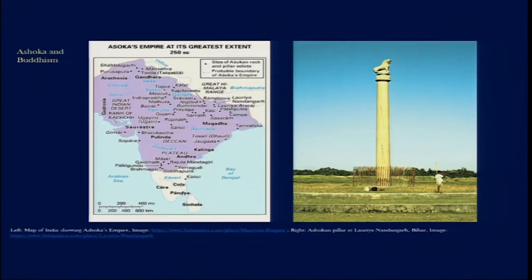We have a map on the left side of our screen showing the extent of Emperor Ashoka's kingdom — how far his political boundaries and the reach of his preaching of dharma went. This happened during the 3rd century BC, when almost the entire Indian subcontinent came under one person's rule, made possible by Emperor Ashoka.